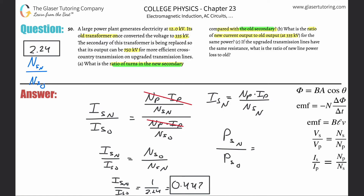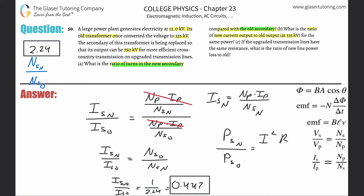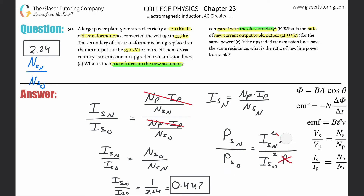We can use the power equation P equals I squared times R. For the new: P_S_new equals I_S_new squared times R. For the old: P_S_old equals I_S_old squared times R. Since the resistance is the same in both cases, R cancels out. The ratio simplifies to I_S_new squared over I_S_old squared, which is the current ratio squared.